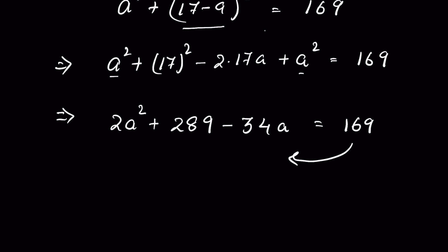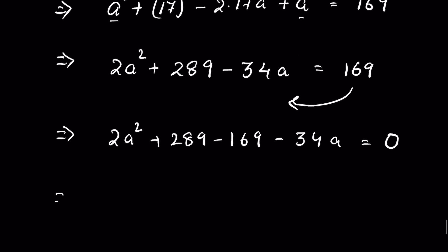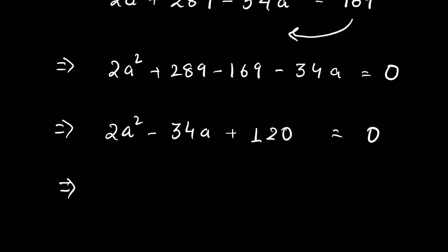Send 169 to the left-hand side. We have a quadratic equation: 2a² + 289 - 169 - 34a = 0, or rearranging, 2a² - 34a + 120 = 0. Take 2 as a common factor.